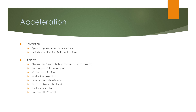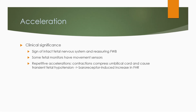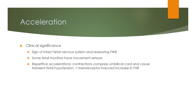Etiology of accelerations includes stimulation of the sympathetic autonomic nervous system, spontaneous fetal movement, vaginal examination, abdominal palpation, environmental stimuli, scalp and vibroacoustic stimuli, uterine contraction, and insertion of IUP or FSC. The clinical significance is that accelerations are a sign of an intact fetal nervous system and reassuring fetal well-being. Some fetal monitors have movement sensors; repetitive accelerations may relate to contractions, compressions, amnionitis, or baroreceptor-induced increases in fetal heart rate.